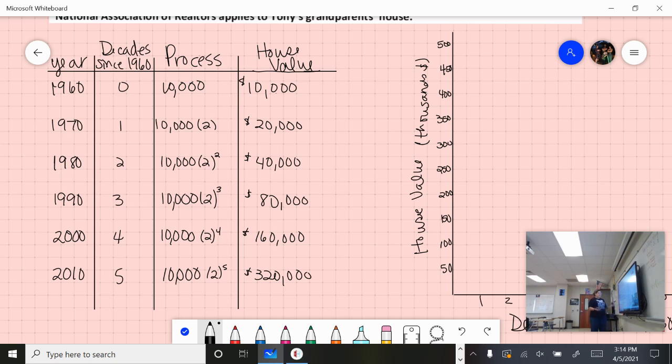If we've got one more time, 2020, it would be $640,000, which makes sense with what we know about housing values today. Our first two process entries don't exactly follow the same format as the rest. We can easily fix that. Our 1970 would be 2 to the first power, and for our initial one, our starting value is 2 to the zero power, because that's going to be our y-intercept.